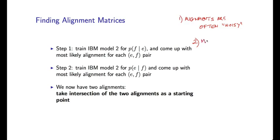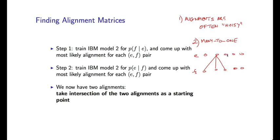And secondly, these alignments are many to one. What I mean by that is that each word in the foreign language is aligned to exactly one word in the English language. So each word on the foreign side is aligned to exactly one word on the English side — many words on this side may be aligned to one word on this side. We can't have alignments where multiple English words are aligned to the same foreign word. This is ruled out. We have the constraint that each foreign word is aligned to exactly one English word, and this isn't necessarily realistic.